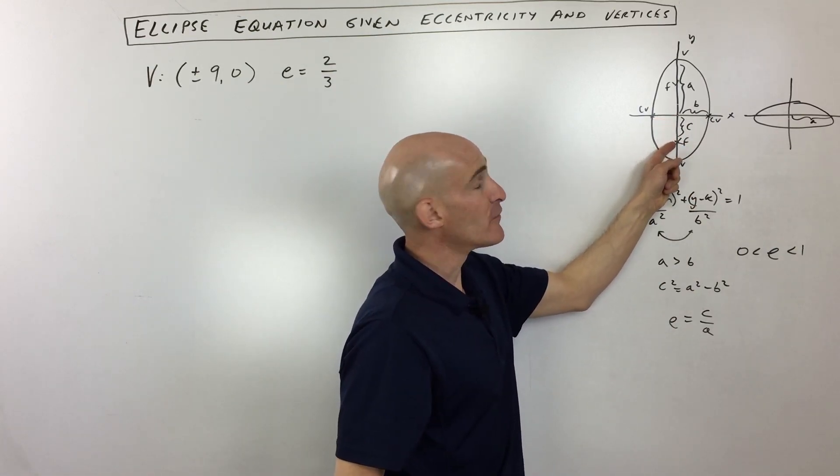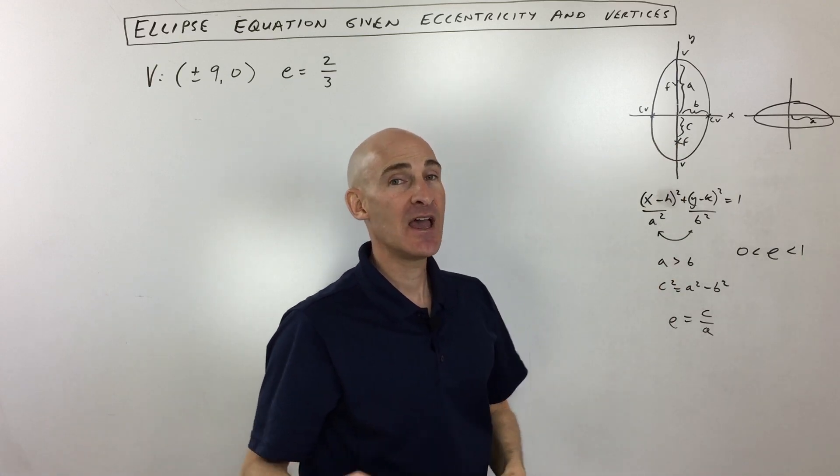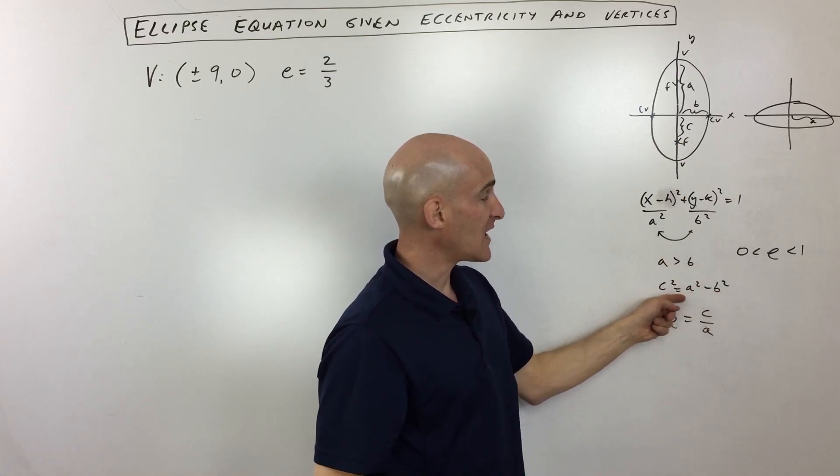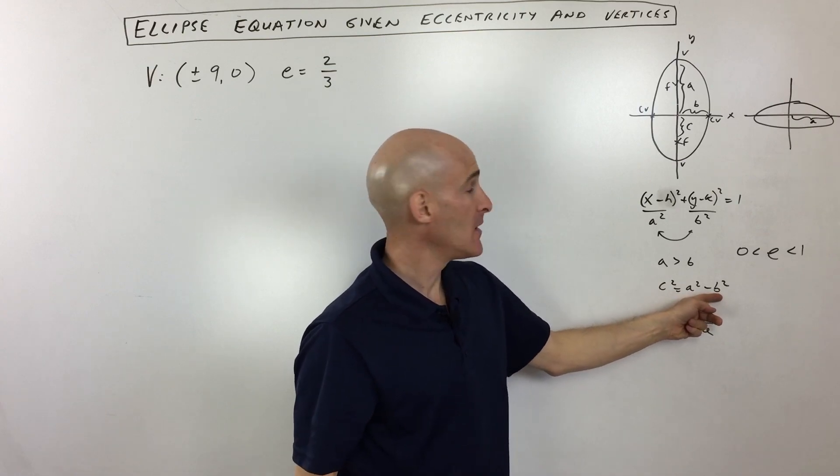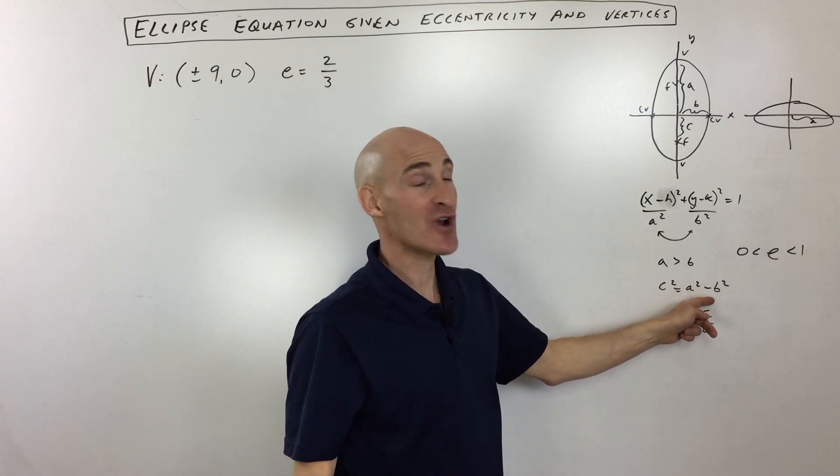And then the distance from the center to the foci, we call that distance c, and it's all tied together with this equation: c squared equals a squared minus b squared. Kind of like Pythagorean theorem, but you're subtracting.